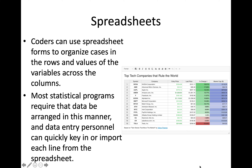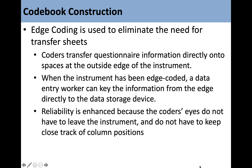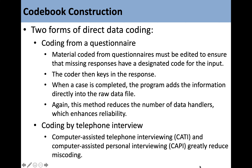Coders can use spreadsheets to organize cases in the rows and values of the variables across the columns. Most statistical programs require that the data be arranged in this manner, and data entry personnel can quickly key in each line from the spreadsheet. However, the use of any kind of transfer sheet requires multiple handling of the data, which increases the possibility of miscoding and threatens reliability. Think about your own research proposal and how you would put all this information onto a spreadsheet. Edge coding is used to eliminate the need for transfer sheets.